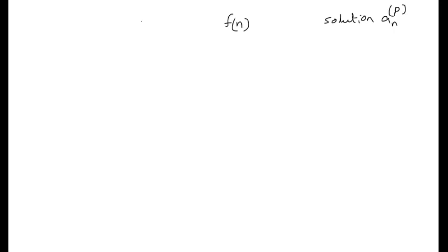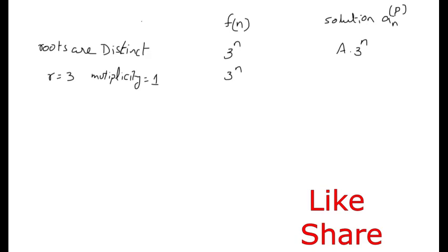The first case: if roots are distinct and not matched with F(n), and F(n) = 3^n, then the particular solution is A·3^n. Suppose a root equals 3 and F(n) = 3^n — the root matches F(n) with multiplicity 1, so the particular solution is A·n·3^n.